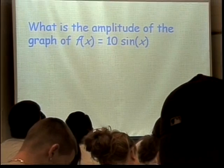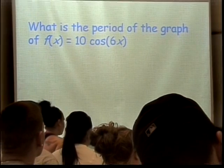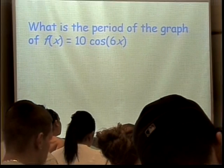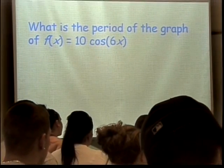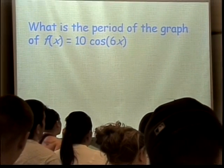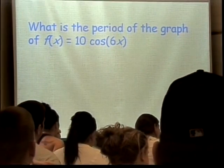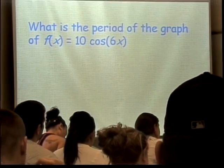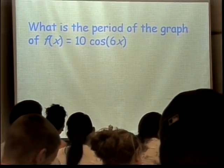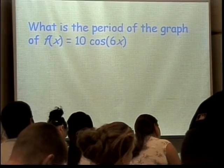What about this one — what is the period for this graph? 10 times the cosine of 6X. The period is equal to 2π over B. So the period here is going to be 2π over 6. No real work needed, actually. It's the other ones where you need work — the ones where you're calculating B and you've got the period already given to you. You just put B right there in front of the X.